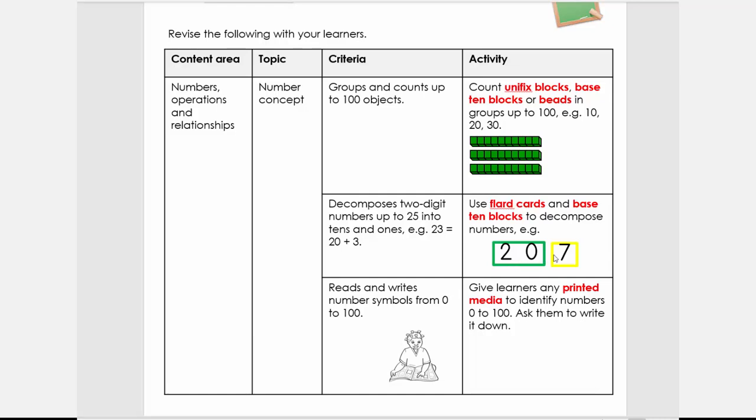Do it from both directions. Give the answer, they need to give you the place value or expanded notation, 20 plus 3. Then you can give them 20 plus 7 and they need to tell you it's 27.